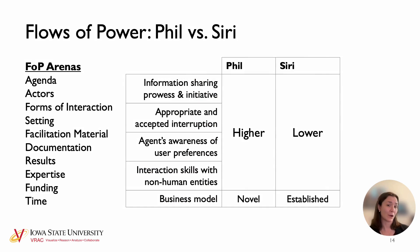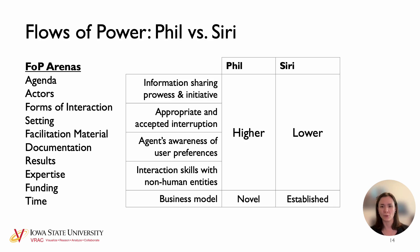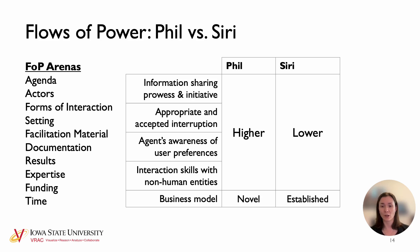The third framework is flows of power, used to look at the social or power-level distance between individuals — things like who are the people in the interaction, where are they, how are they interacting, what materials do they have, their relative expertise, relative funding, and whether one is paying the other. Compared to Siri, Phil has a more equal power level relative to the human, with its ability to proactively share information, initiate conversation, interrupt conversations, interact with other humans and non-human entities — and presumably with other agents, like Jill Gilbert's agent.